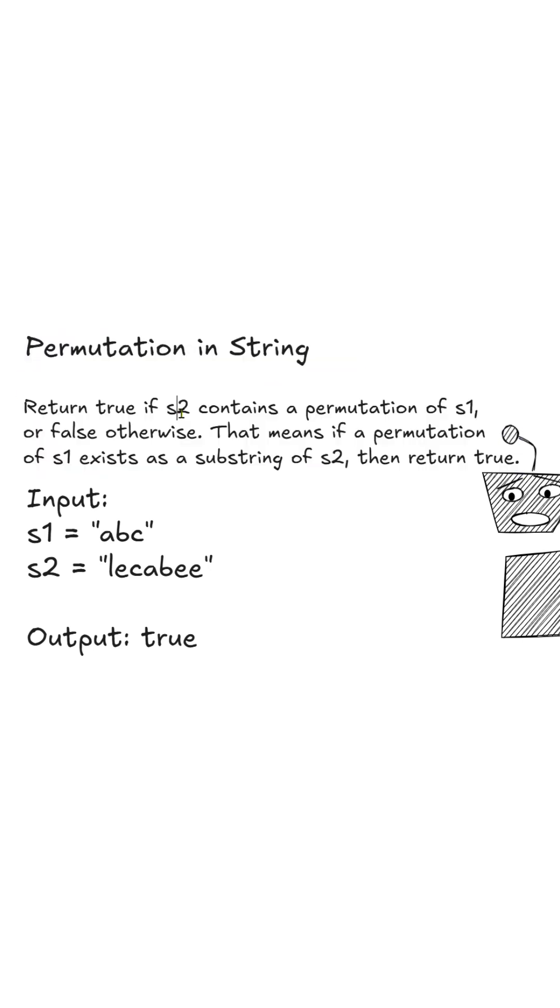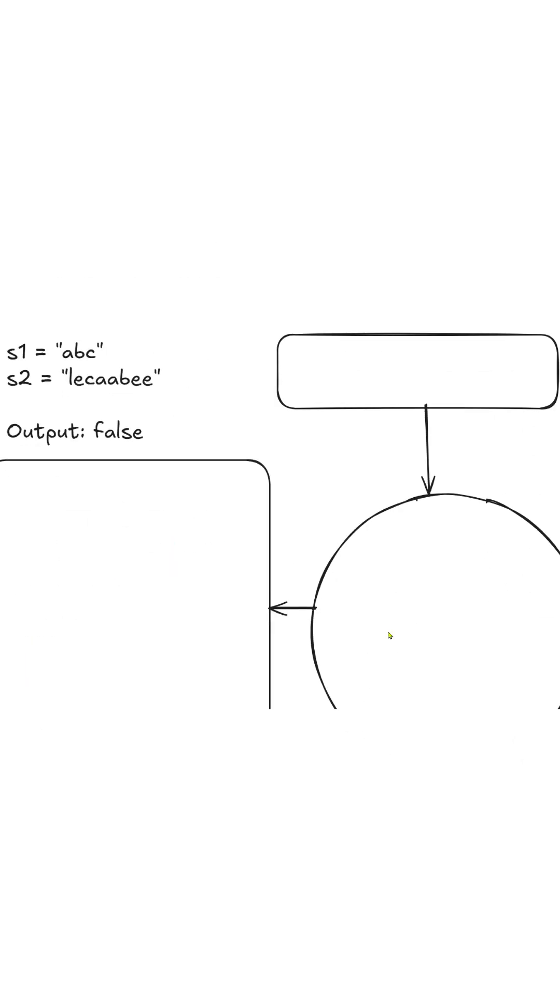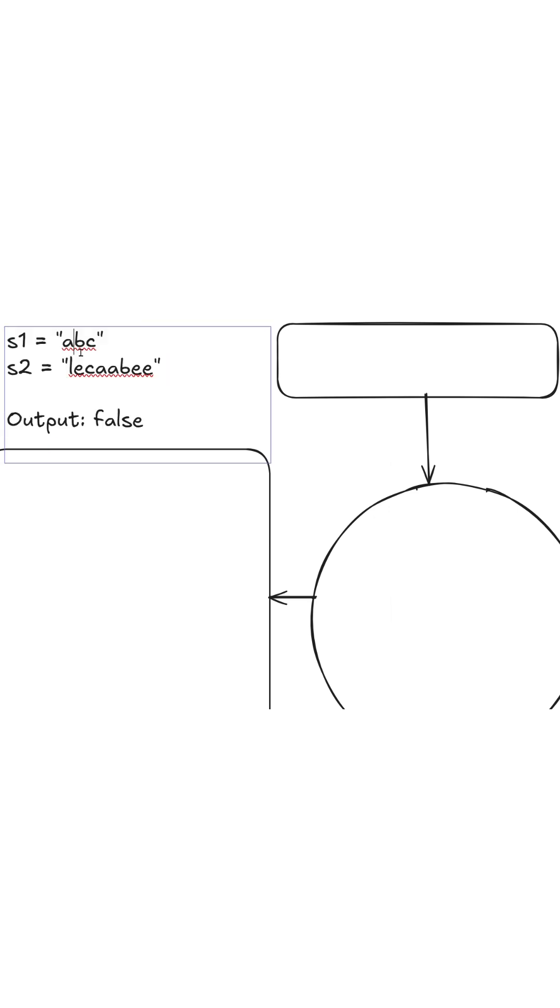We need to return true if s2 contains a permutation of s1, else false. Herein we have abc and cab which are permutations of each other. In this example we do not have a substring that is a permutation of abc.